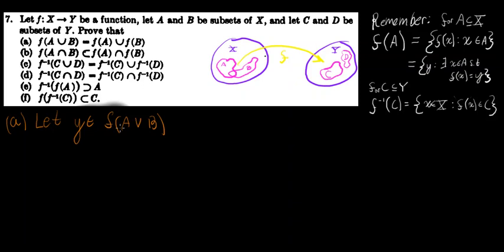So let y be in the image of a union b under f. These definitions are crucial for this problem — most of the problem hinges on them. The image of a under f, for any set a where a is a subset of x (the domain of f), is all f of x where x is in a. Another way to say that: all y such that there exists an x in a, such that f of x is equal to y.